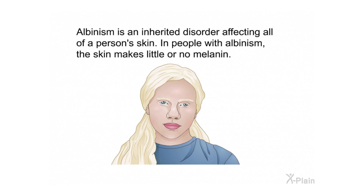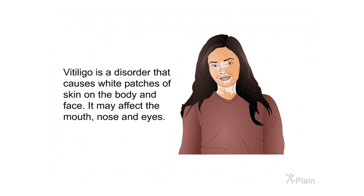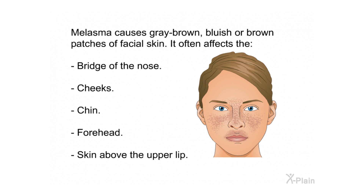Albinism is an inherited disorder affecting all of a person's skin; in people with albinism, the skin makes little or no melanin. Vitiligo is a disorder that causes white patches of skin on the body and face, and may affect the mouth, nose, and eyes. Melasma causes gray-brown, bluish, or brown patches of facial skin, often affecting the bridge of the nose, cheeks, chin, forehead, and skin above the upper lip.